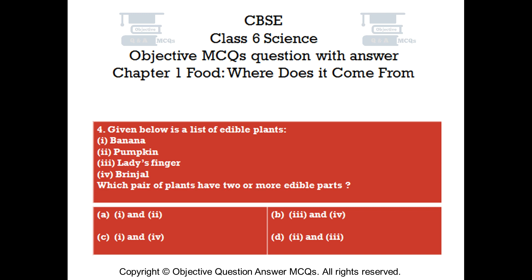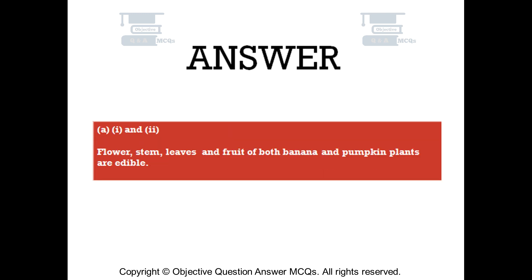The right answer is Option A — 1 and 2. The flower, stem, leaves, and fruit of both banana and pumpkin plants are edible.